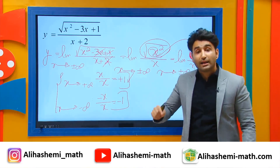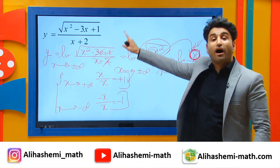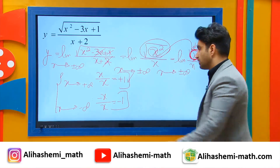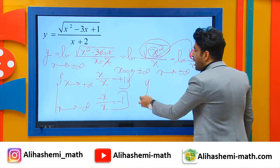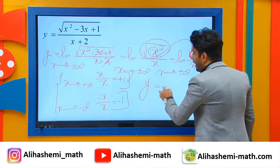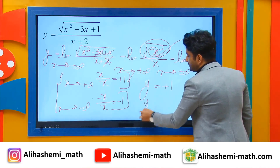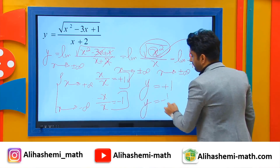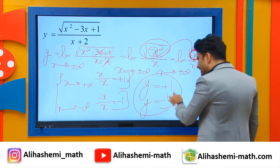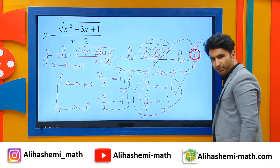So, the horizontal asymptotes of this function are positive 1 and negative 1. Really simple. Am I right?